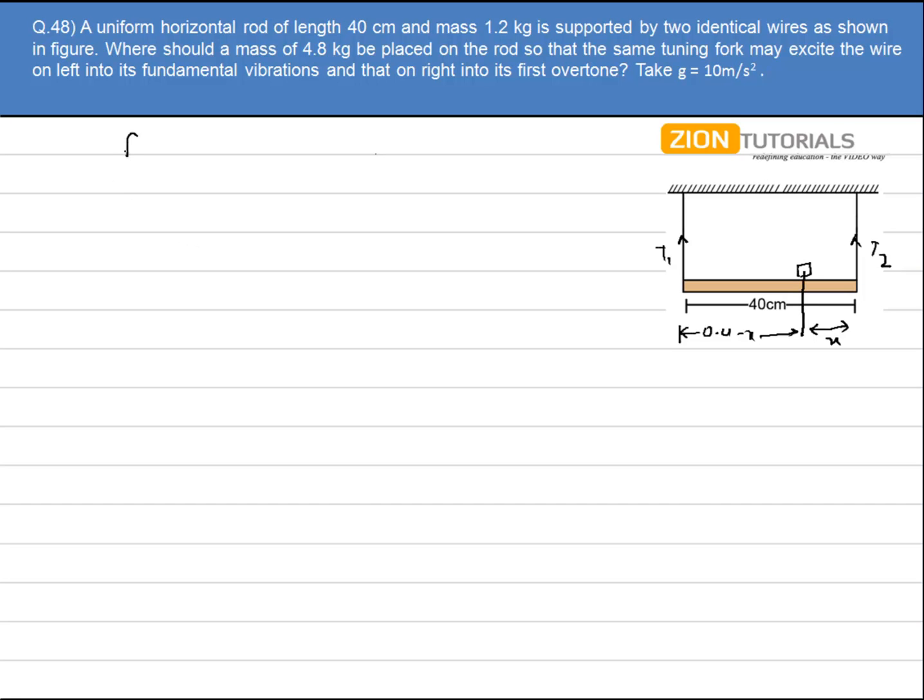So the frequency in the right hand side, let it be f2, is two times of the fundamental frequency that is on the left hand side.